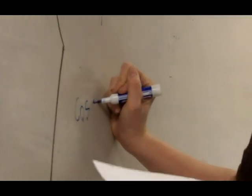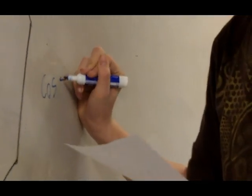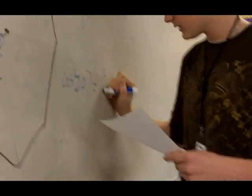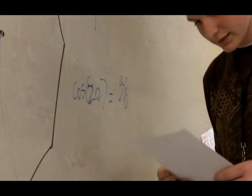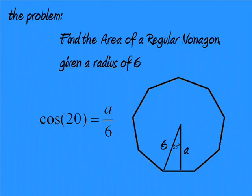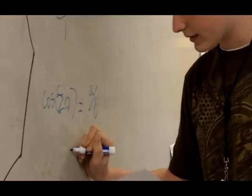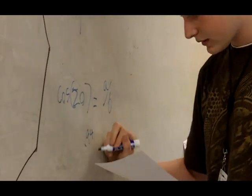So you're going to do cosine of 20 equals A divided by 6. And when you do cosine of 20, you're going to get 0.94 equals A over 6.